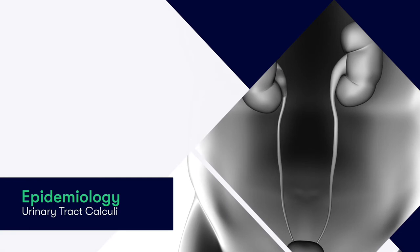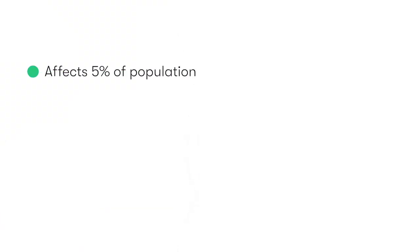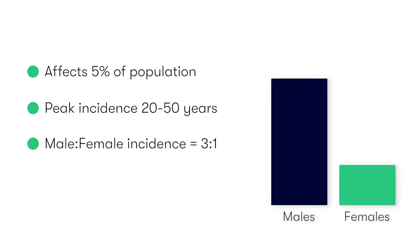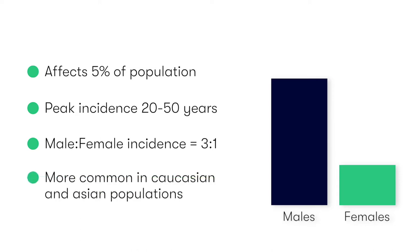Urinary tract calculi are pretty common, affecting approximately 5% of the population. The occurrence of stones is rare in very young and very old individuals, and the peak incidence is between the ages of 20 and 50. Urinary tract stones are significantly more common in the male population, with an incidence of three cases to every one female case. Also, they most commonly occur in Caucasian and Asian populations.